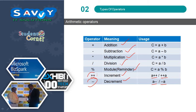The usage of Addition: C equals A plus B — the sum of A and B is assigned to C. Similarly, subtracting B from A is assigned to C; multiplying A and B is assigned to C; dividing A by B gives the quotient assigned to C. A modulo B gives the remainder assigned to C. These are the Arithmetic Operators.